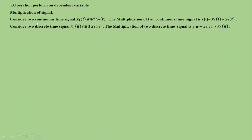Now we will see this continuous signal x1 of t and x2 of t. We will see multiplication of two continuous signals x1 of n and x2 of t. So we will see y of n is equal to x1 of n into x2 of n.